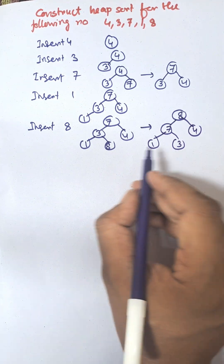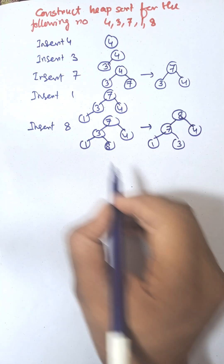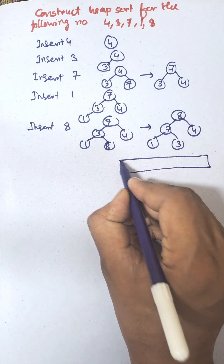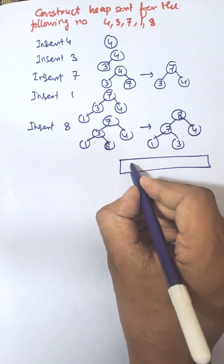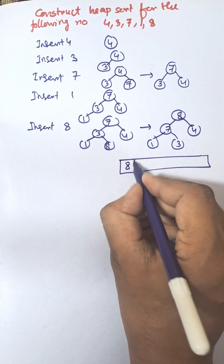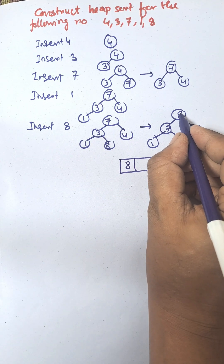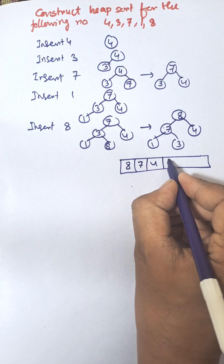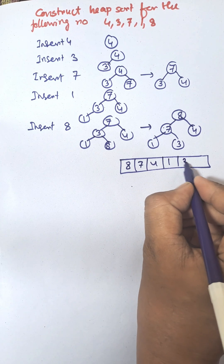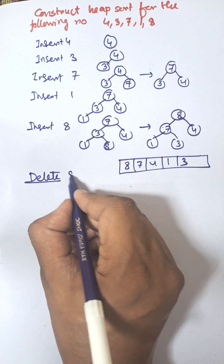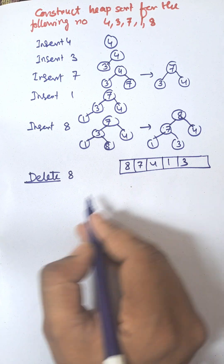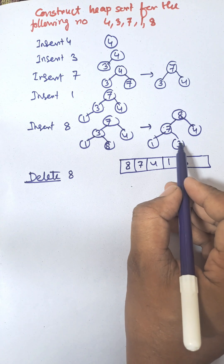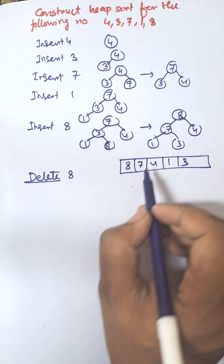The next swap will be between 7 and 8. So the final tree will be 8, 7, 3, 1, and 4. This is now the max heap of the given numbers. We need to construct the array: index 0 to 4 gives us 8, 7, 4, 1, 3.